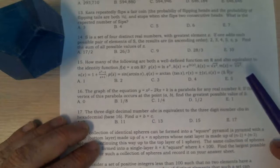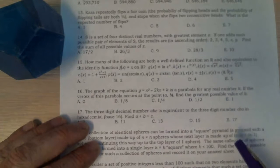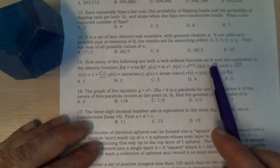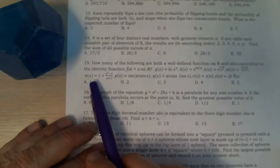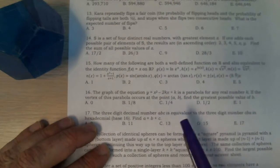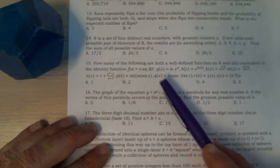Problem number 15 says: how many of the following are both a well-defined function on R and also equivalent to the identity function f(x) = x on R?